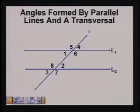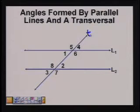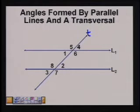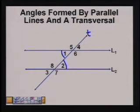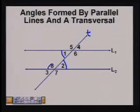Let's go ahead and mark the transversal, and then the first angle that we're going to talk about will be alternate interior angles. Alternate interior angles lie between the two lines on opposite sides of the transversal. So in this drawing, angles 1 and angle 2 are alternate interior angles. If you said angle 8 and angle 6, you're correct.